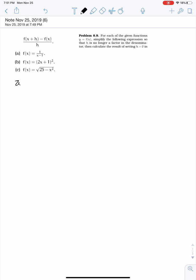Part A says f of x equals 1 over x minus 1. So first we need to figure out what f of x plus h is. Just substitute in x plus h everywhere we see an x, so x plus h minus 1.